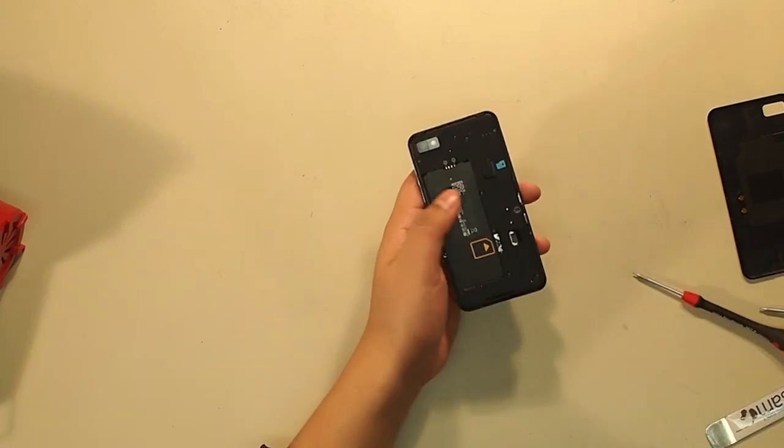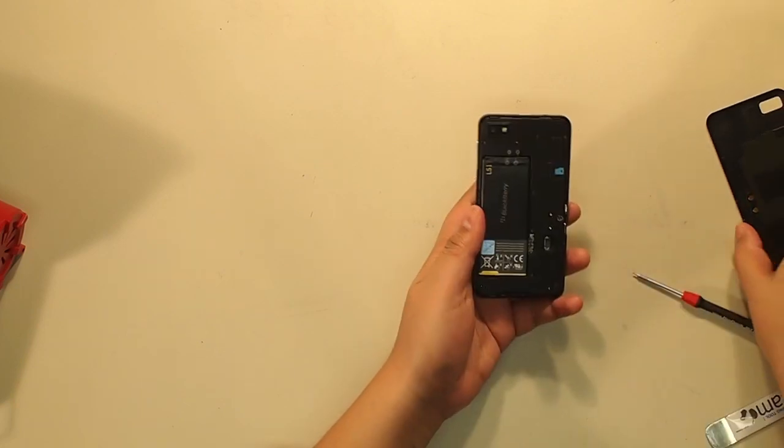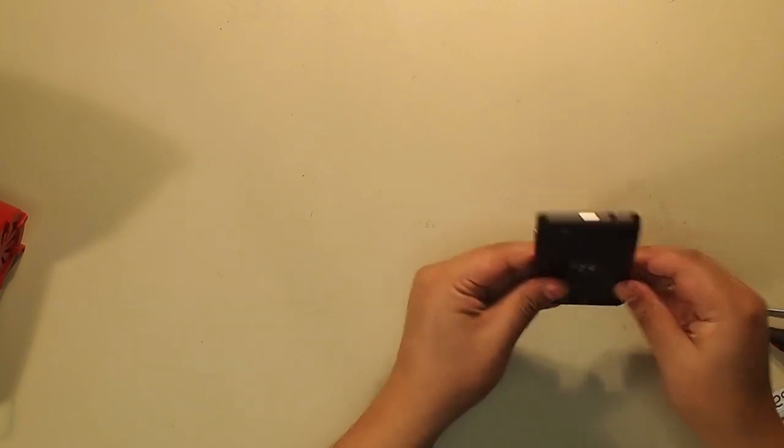Put the battery back in. Put the back cover back on. And we're done. That's how you take apart and put together the BlackBerry Z10. We'll see you next time.